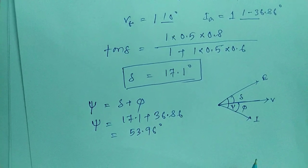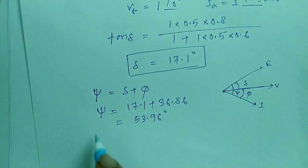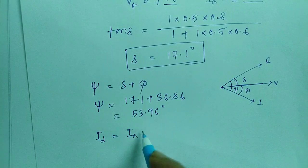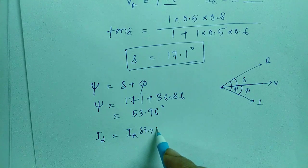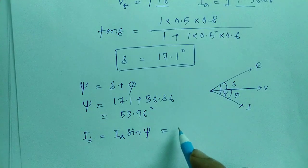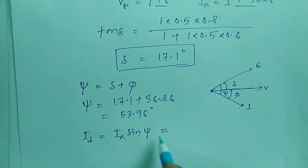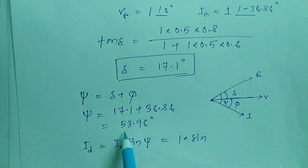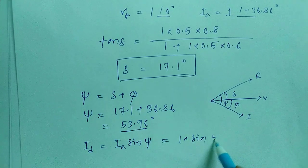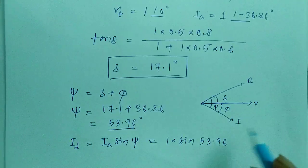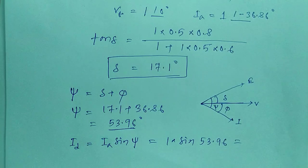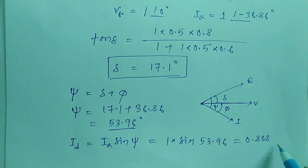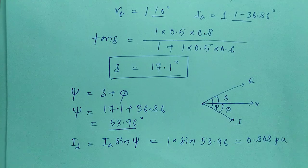From the phasor diagram, we know the value of Id is: Id = Ia · sin(ψ). With Ia = 1 and ψ = 53.96°, the value of Id comes out to be 0.808 per unit. Every value here is in per unit.